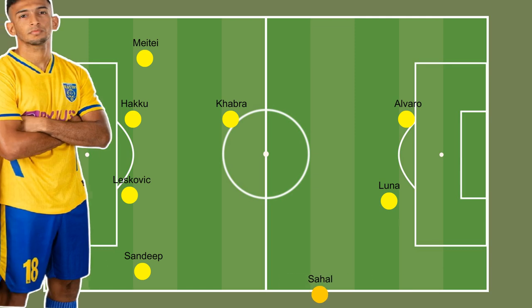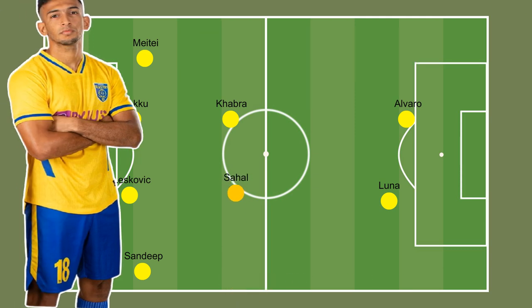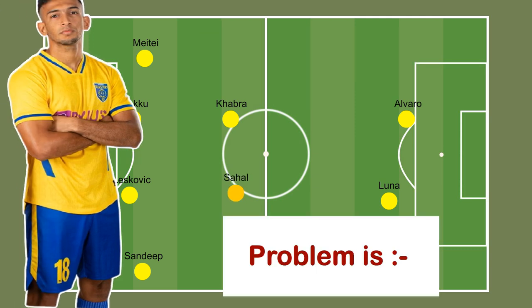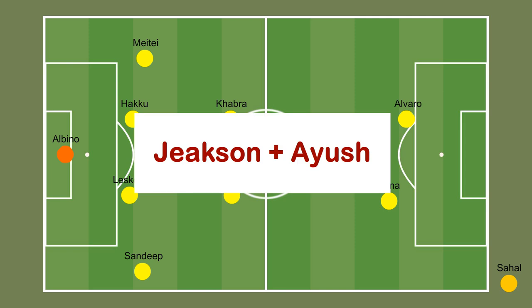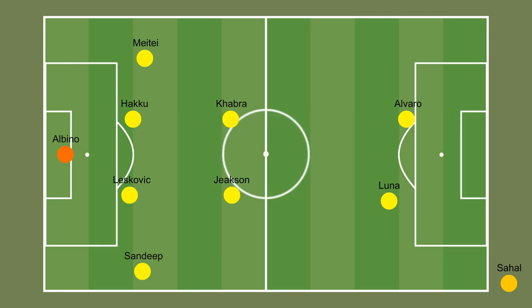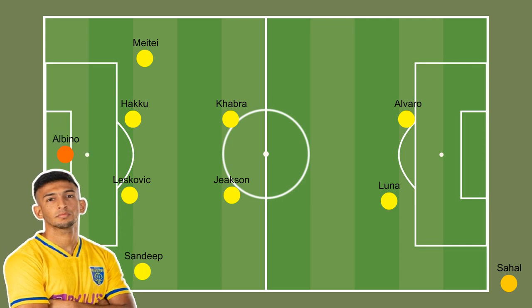Another position Sahal can play is the number 8 role, but the problem is Sahal's defense. The coach wants a more defensive player like Jekson in that position, and there are also chances for a Jekson-Iyush combo. The coach may use Sahal in the number 8 role only when the team is trailing, so there is no chance for Sahal to start as a number 8.